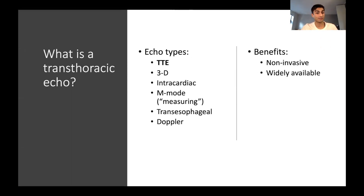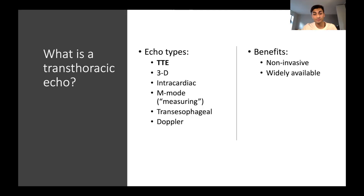So what is a transthoracic echocardiogram, or transthoracic echo for short? There are different echo types. There's TTE, which is what we're going to be talking about today. There's also 3D transthoracic echo, where you can see in three dimensions what you're imaging. There's intracardiac echo, where you're essentially probing from inside the heart using a catheter. There's M-mode, which allows you to take measurements. There's transesophageal, where you're using the probe from inside the esophagus. And then lastly, there's Doppler echo, where you can visualize blood flow.